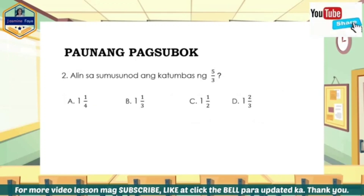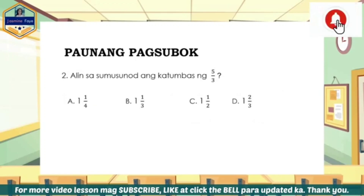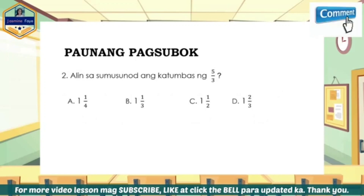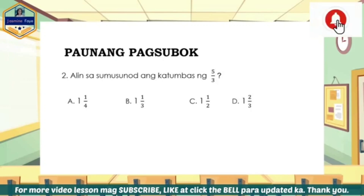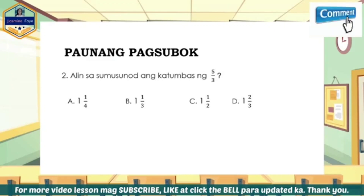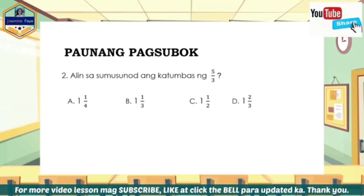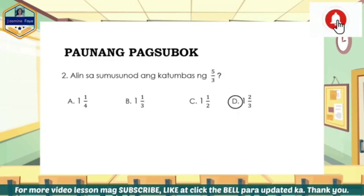Ikalawang bilang: alin sa sumusunod ang katumbas ng 5 thirds? A. 1 and 1 fourth, B. 1 and 1 third, C. 1 and 1 half, D. 1 and 2 thirds. Ang tamang kasagutan ay letter D.